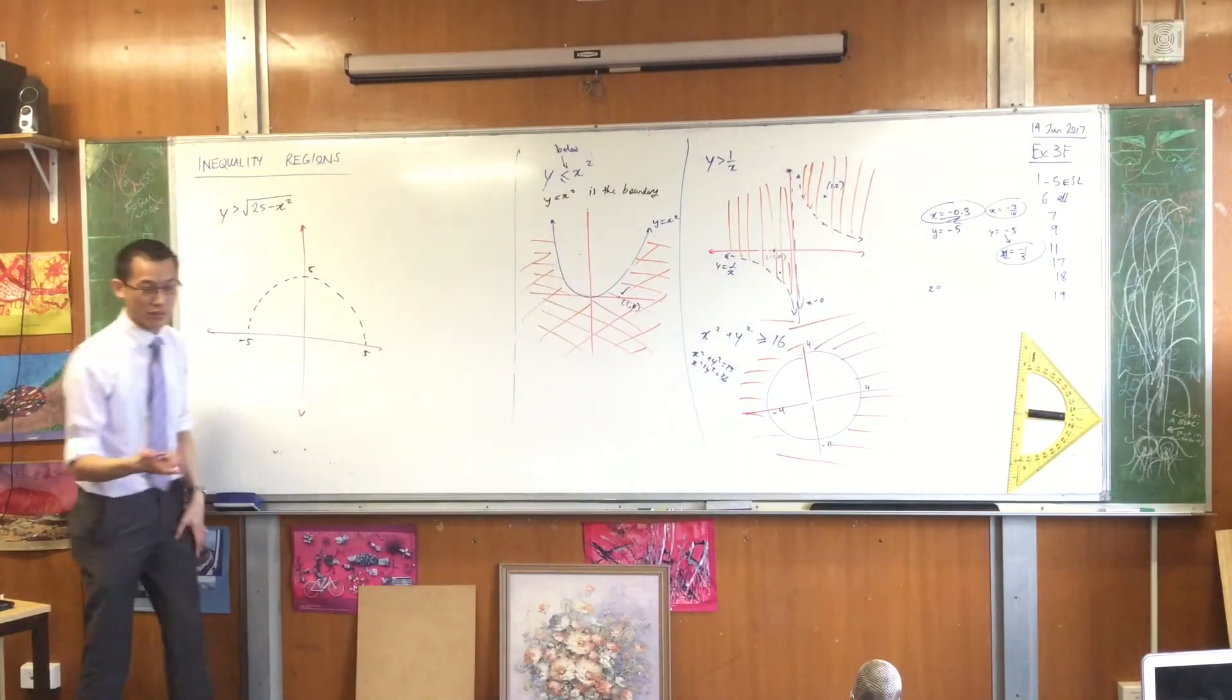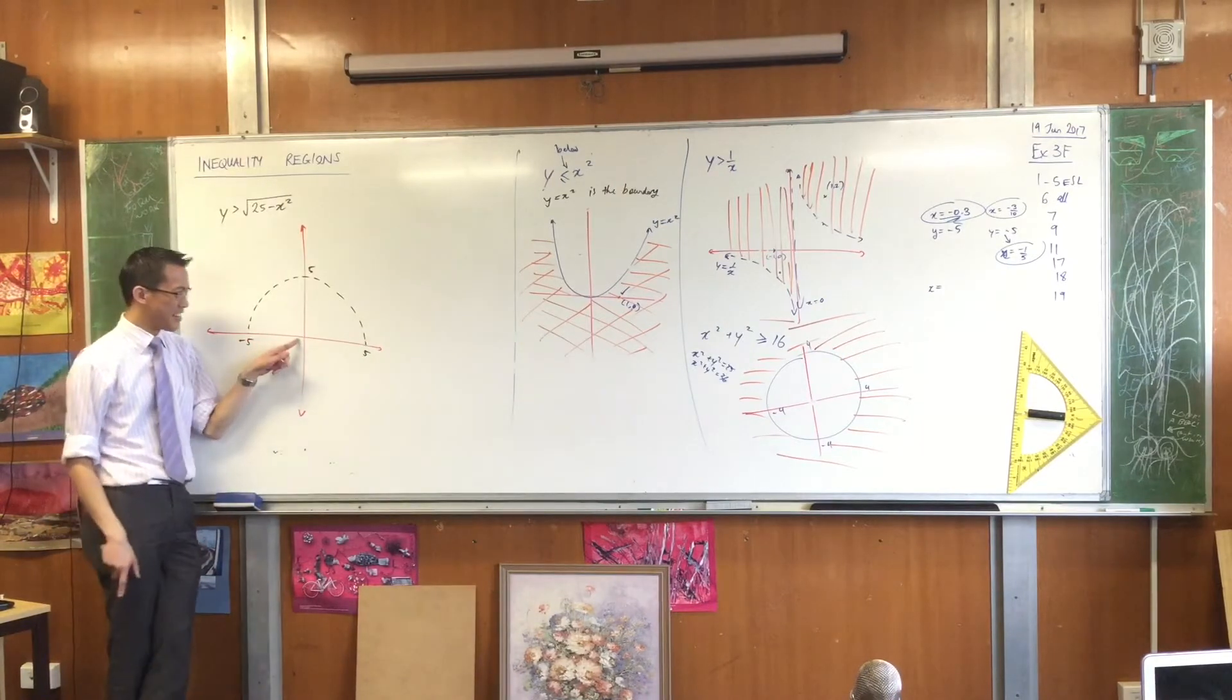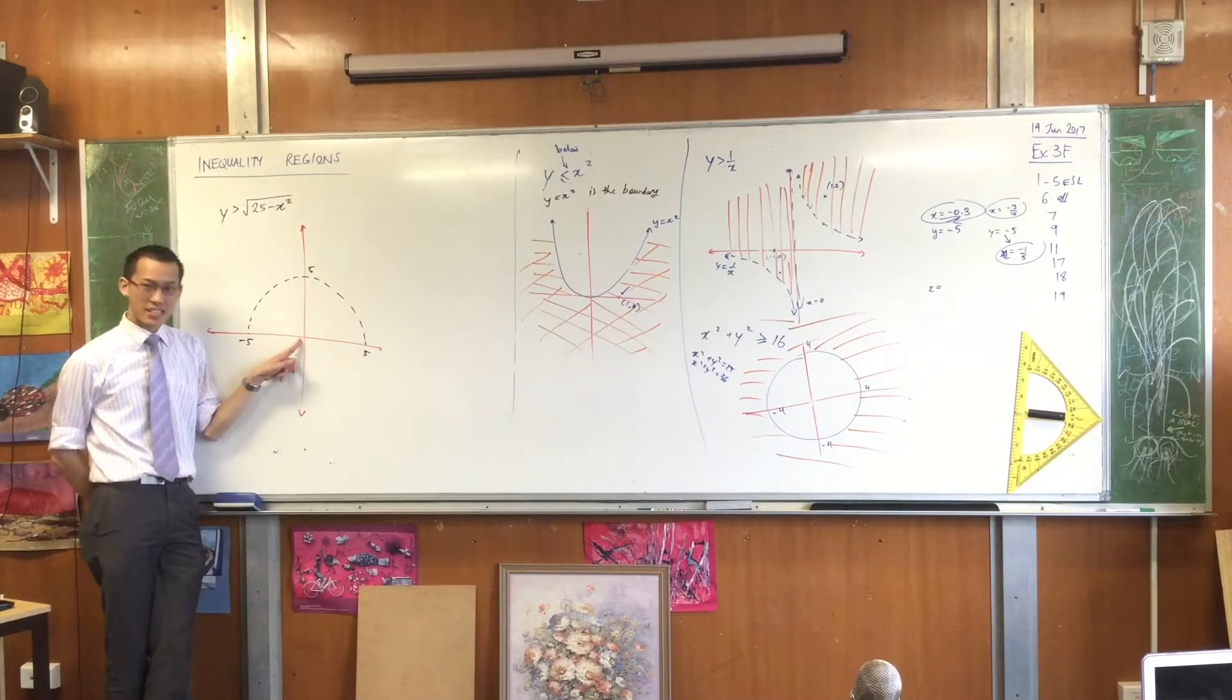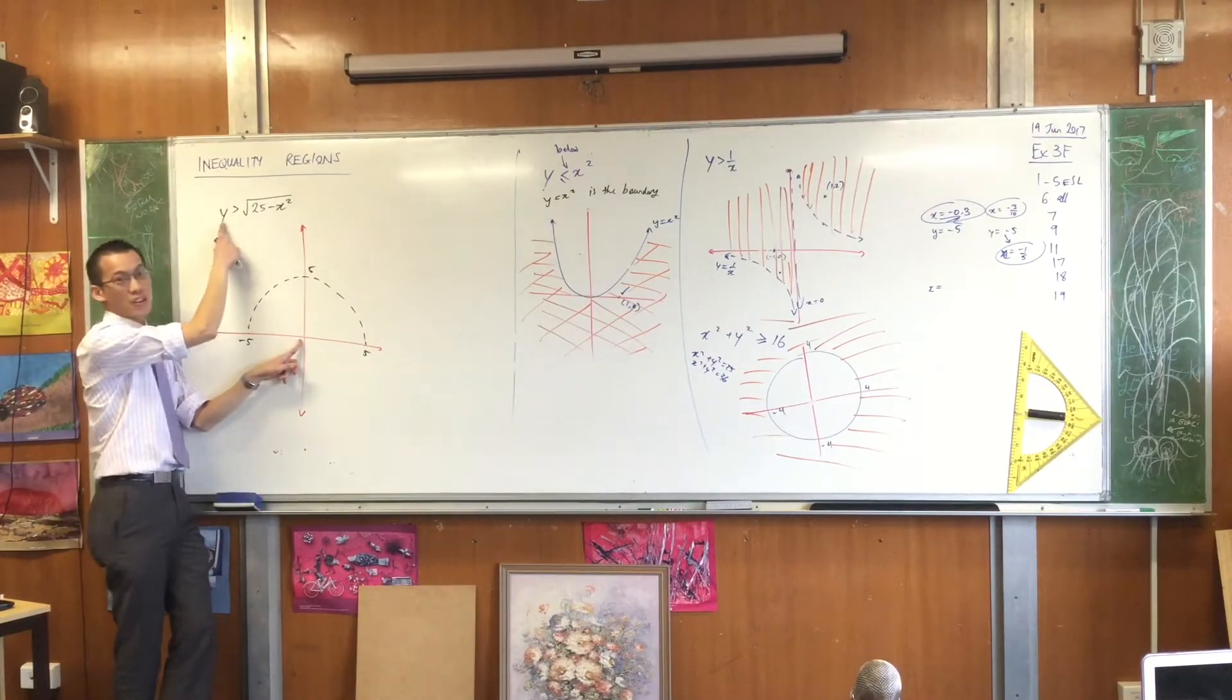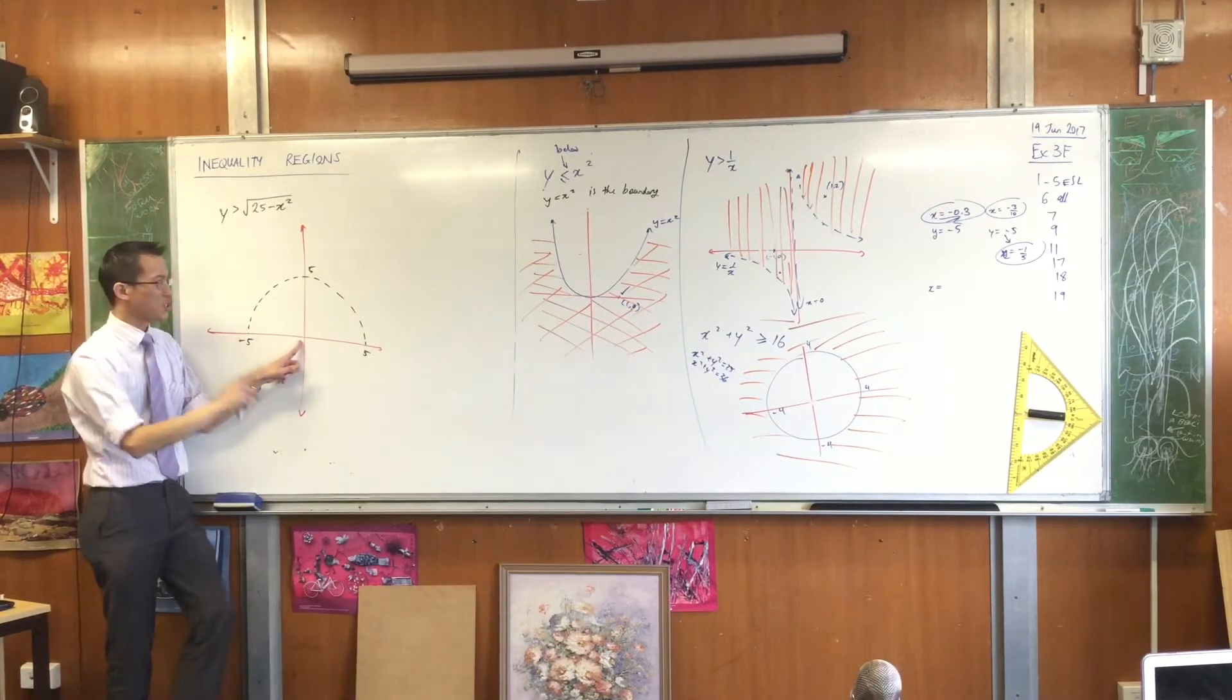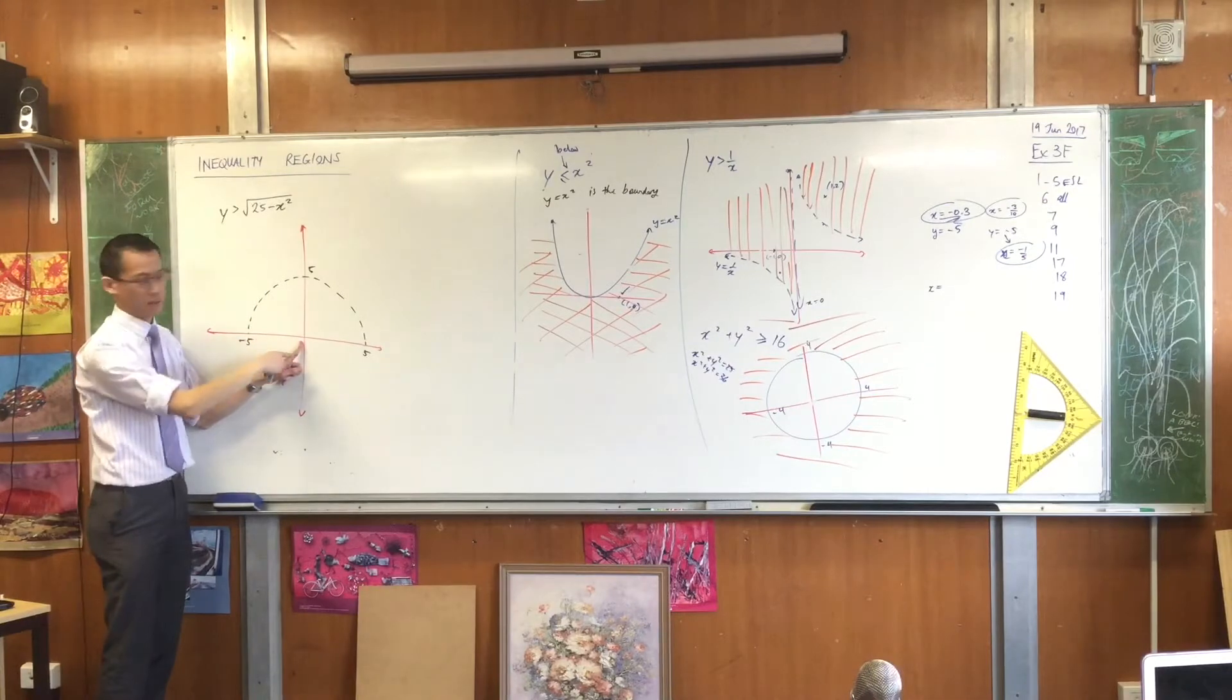So if I test zero, zero, rather than, I'll get to your point in a minute. If I test zero, zero, does the origin satisfy this inequality or not? It does not, because zero is not greater than five, right? Does that agree? Okay. So I know that this area down here is not going to be in here, right?